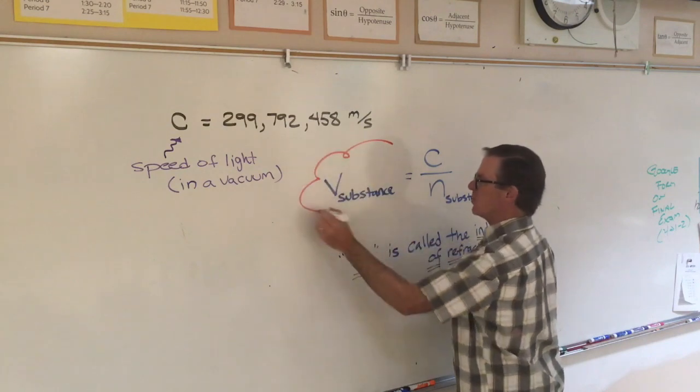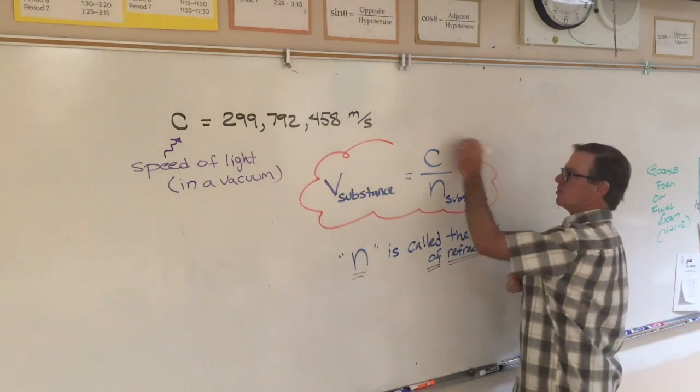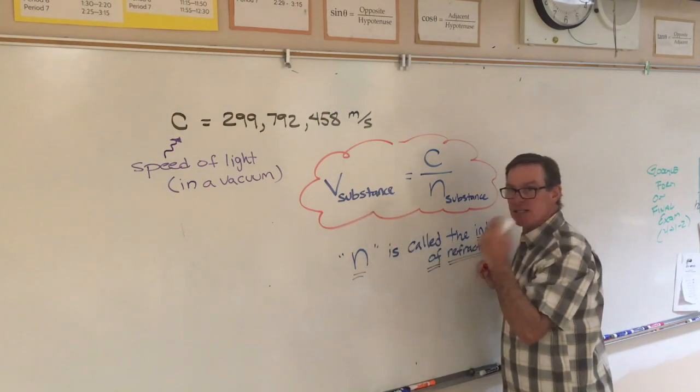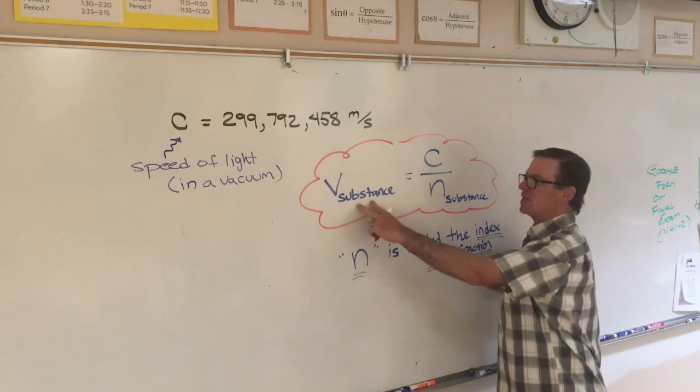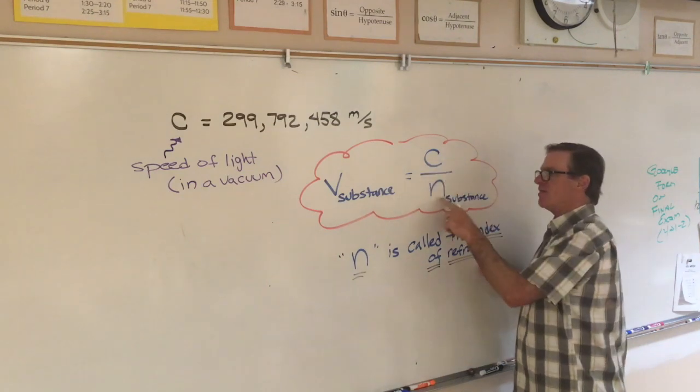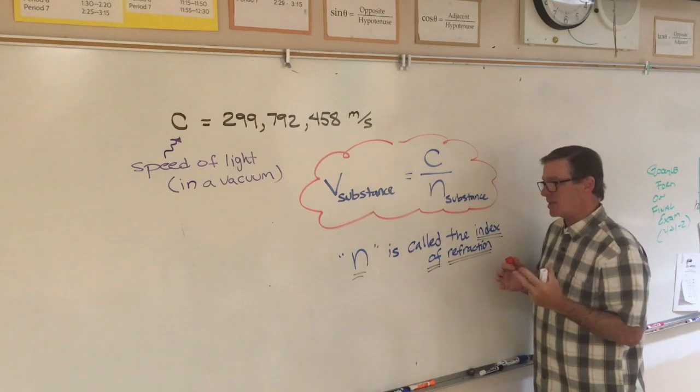The speed of light in the substance, whether it's glass, plastic, water, what have you, is equal to the speed of light, 3 times 10 to the 8th meters per second, divided by something called the index of refraction of that substance.